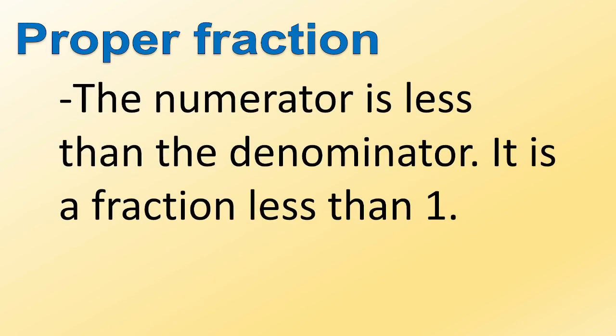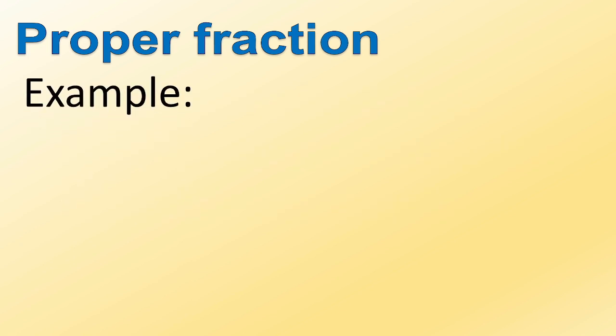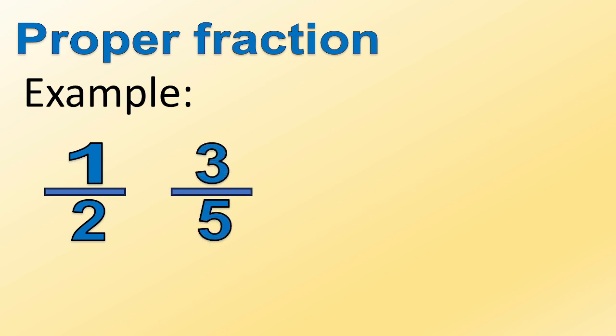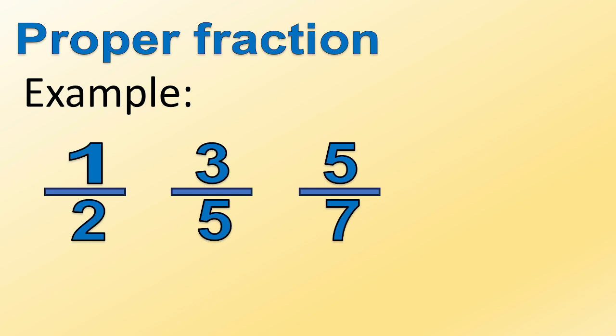Proper fraction: the numerator is less than the denominator. It is a fraction less than one. Examples: one-half, three-fifths, five-sevenths, eleven-fifteenths. How about improper fractions?